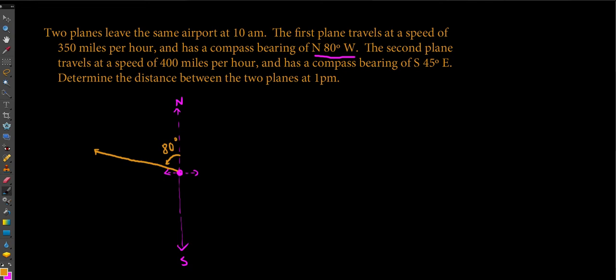Now our second plane had a compass bearing of south 45 degrees east and was traveling 400 miles per hour. South 45 degrees east is splitting the difference between south and east. I'm going to make this look longer than the first side because this plane is traveling just a little bit faster. We'll also make sure we put in our angle, a 45 degree angle right here.